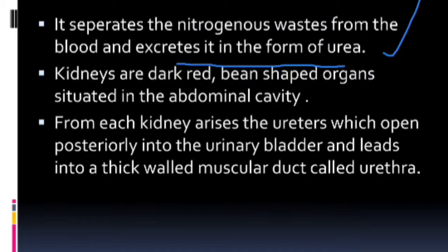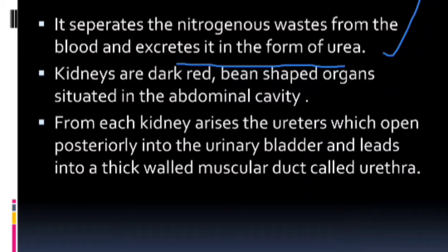Uric acid is the excretory product of reptiles and birds. In reptiles and birds, the excretory product is uric acid. But in mammals, including the rabbit and human beings, the main excretory product is urea. One more excretory product is ammonia.